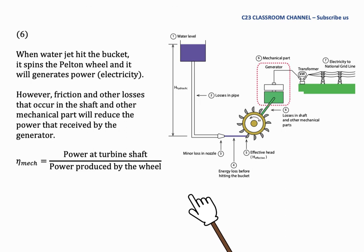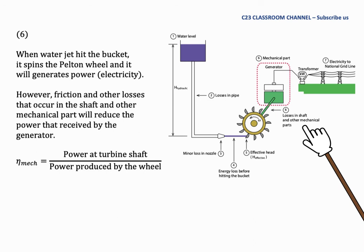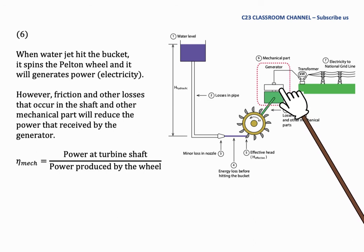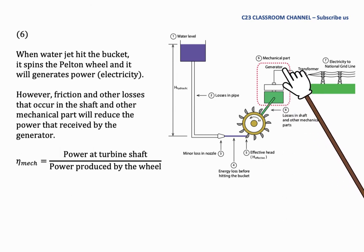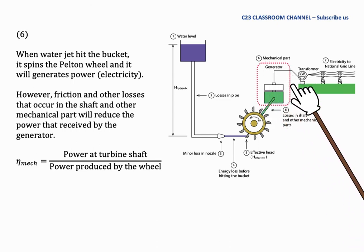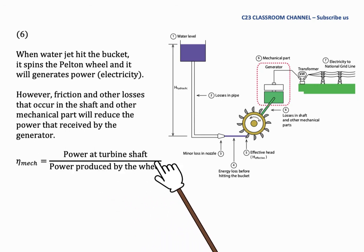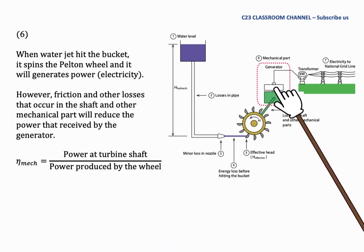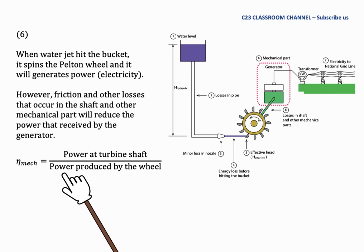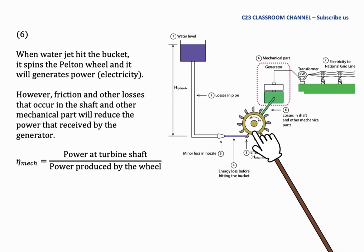When the water hits the bucket, it spins the Pelton wheel and generates power. However, friction and other losses in the shaft and mechanical parts reduce the power received by the generator. The mechanical efficiency is therefore calculated as the power at the turbine shaft divided by the power produced by the wheel, where the power produced by the wheel corresponds to the Euler head.